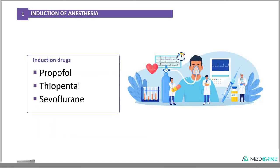General anesthesia has three stages: the induction stage, the maintenance stage, and the reversal or emergence stage. In the induction stage, we use induction drugs, for example propofol, thiopental, and sevoflurane.